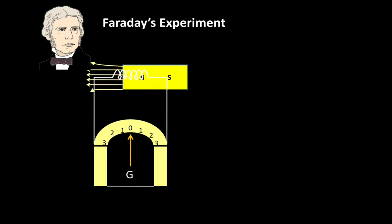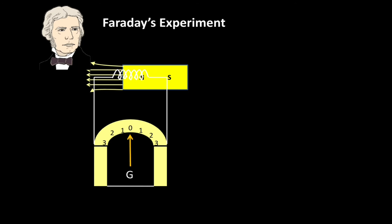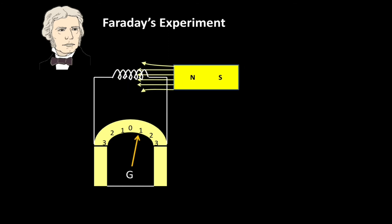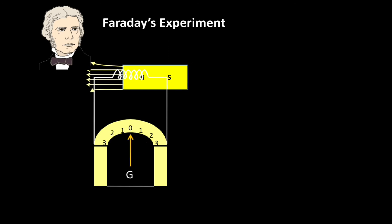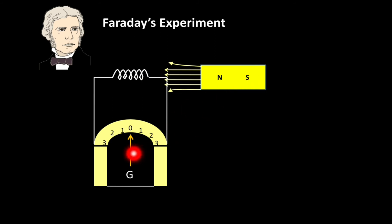In the next step, Faraday moved the magnet away from the conductor. The result was the same — the needle deflected, but in the opposite direction. From these two steps it is clear that when the magnet moved near the conductor the needle deflected, but when movement stopped the needle came to zero. When the magnet moved away, the needle deflected again, but when movement stopped, the needle returned to zero.